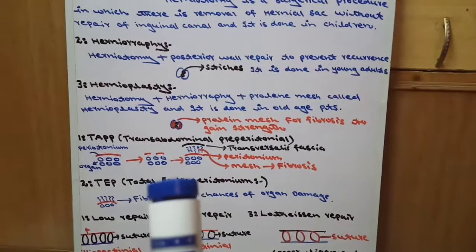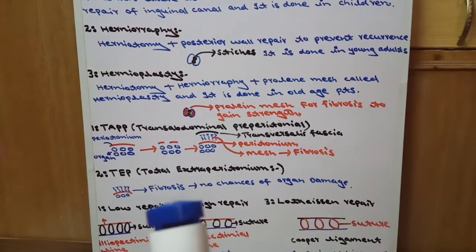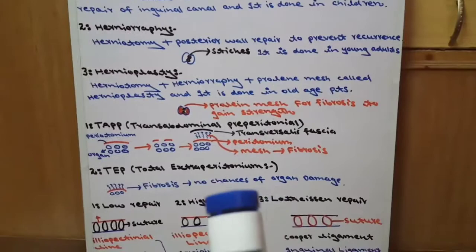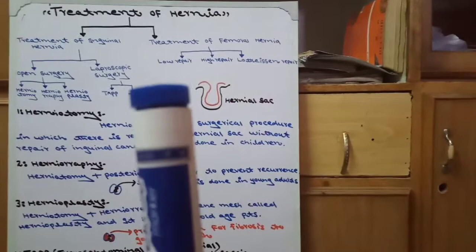In TEP - total extraperitoneal - peritoneum is not opened. There are no chances of organ damage because we don't open the peritoneum or organs. TEP is the best method. So these are the laparoscopic surgery methods. Now we come to treatment of femoral hernia, which has low repair, high repair, and low tension repair.